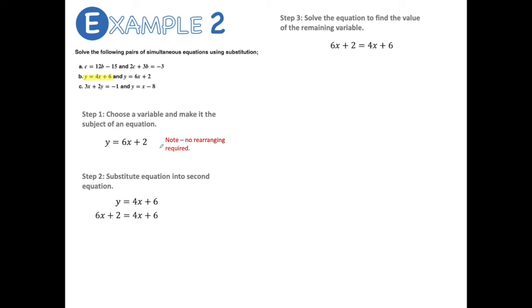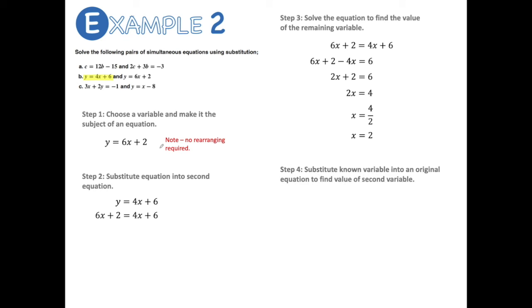Now that I've substituted into the equation, I can work out the value of x. So 6x plus 2 equals 4x plus 6. Collecting all x terms onto one side: 2x plus 2 equals 6. Subtracting 2 from both sides: 2x equals 4, so x equals 2. Now that I've got the value of x, I substitute into y equals 6x plus 2: y equals 6 times 2 plus 2, so y equals 14. The answer is x equals 2, y equals 14.